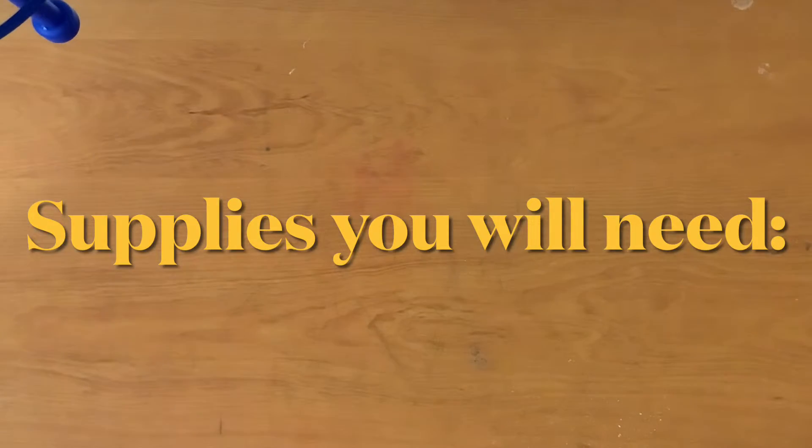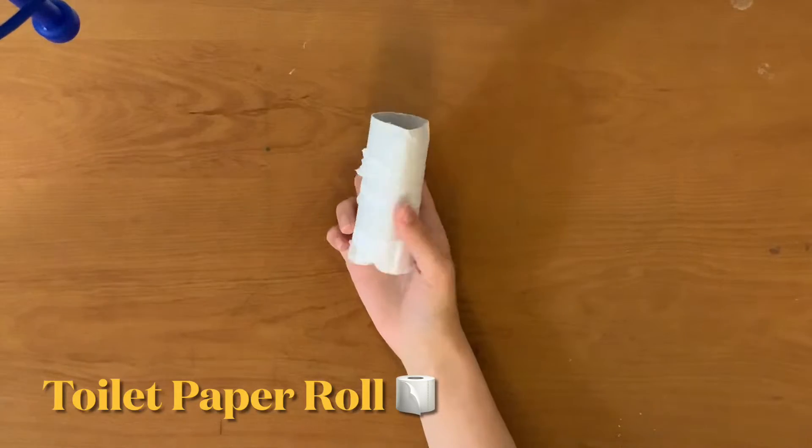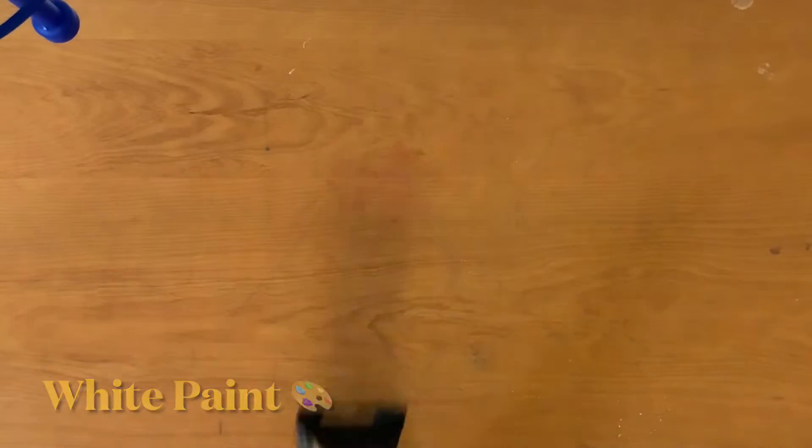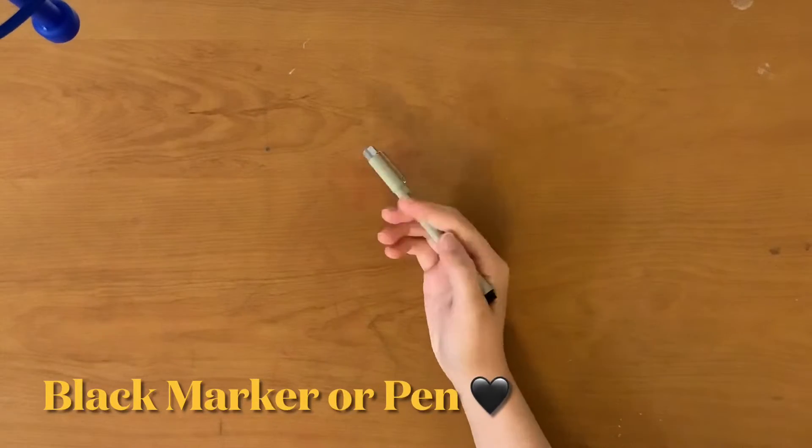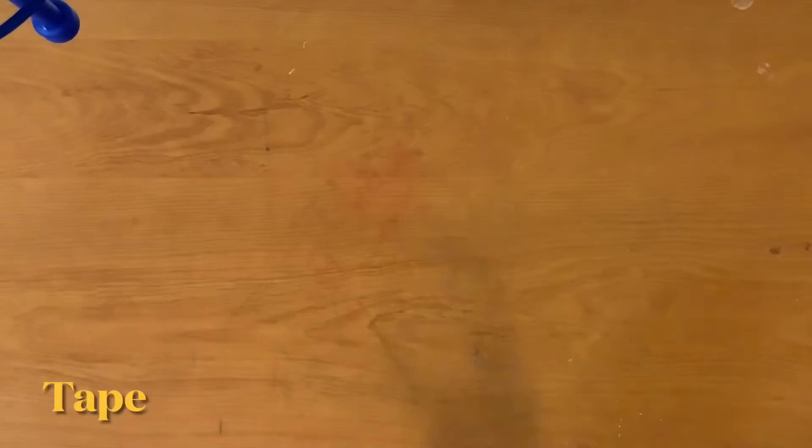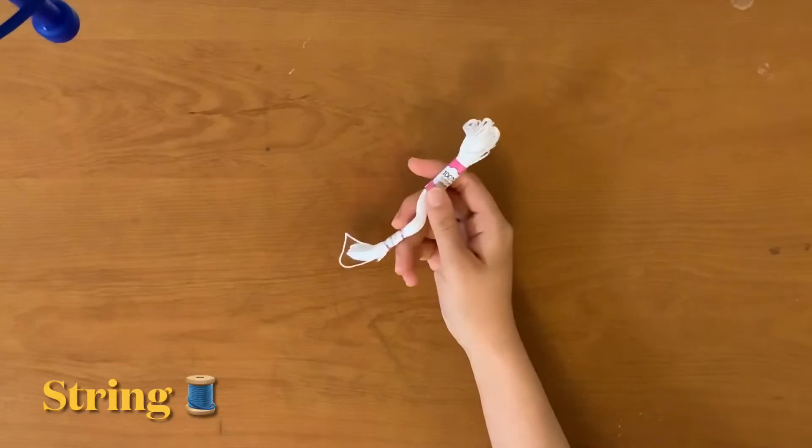Supplies you need for this craft include a toilet paper roll, toilet paper, scissors, white paint, a paintbrush, a black marker or pen, tape, and string.